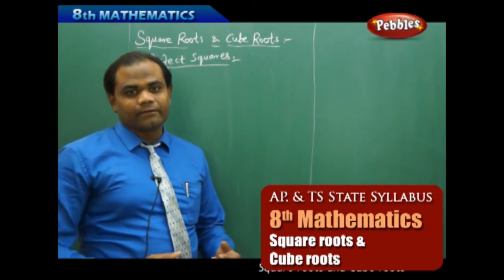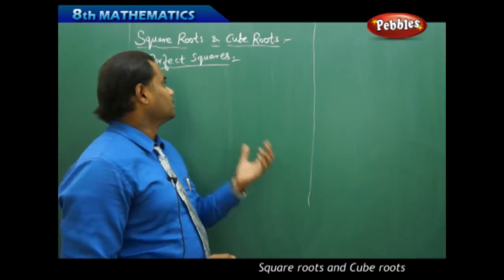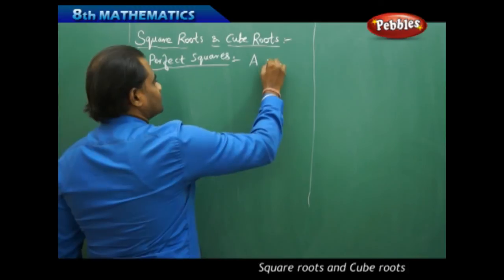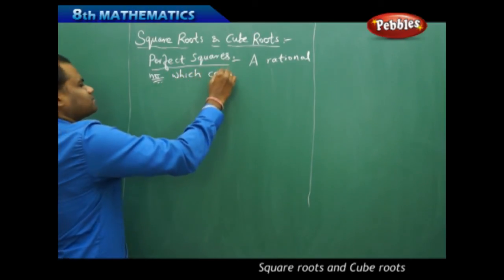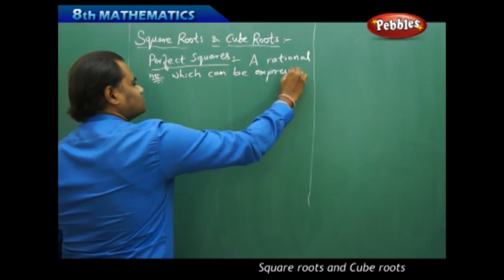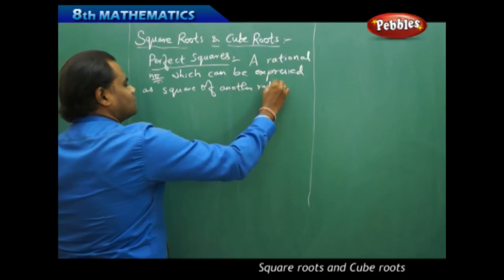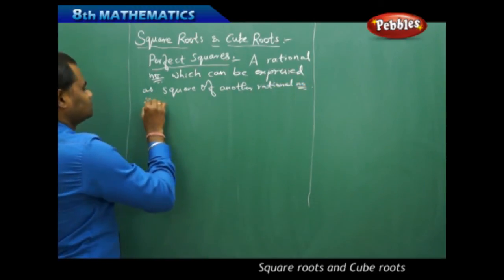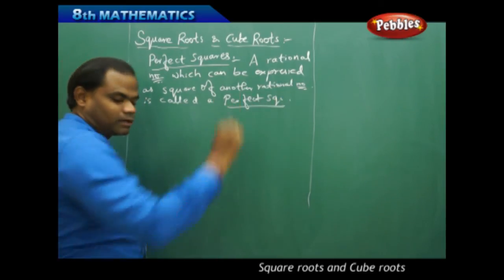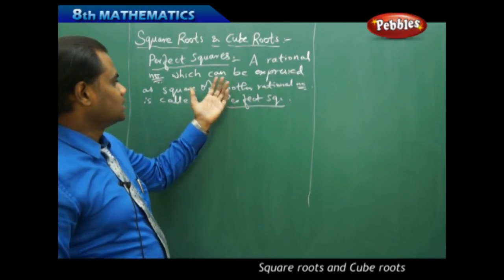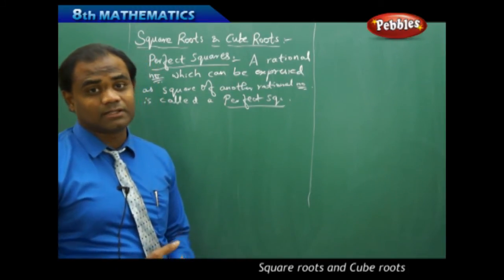If I can express any rational number as a square of another rational number, then that rational number is called a perfect square. So a perfect square is a rational number which can be expressed as a square of another rational number. Let's see with examples what numbers form perfect squares and what numbers do not.